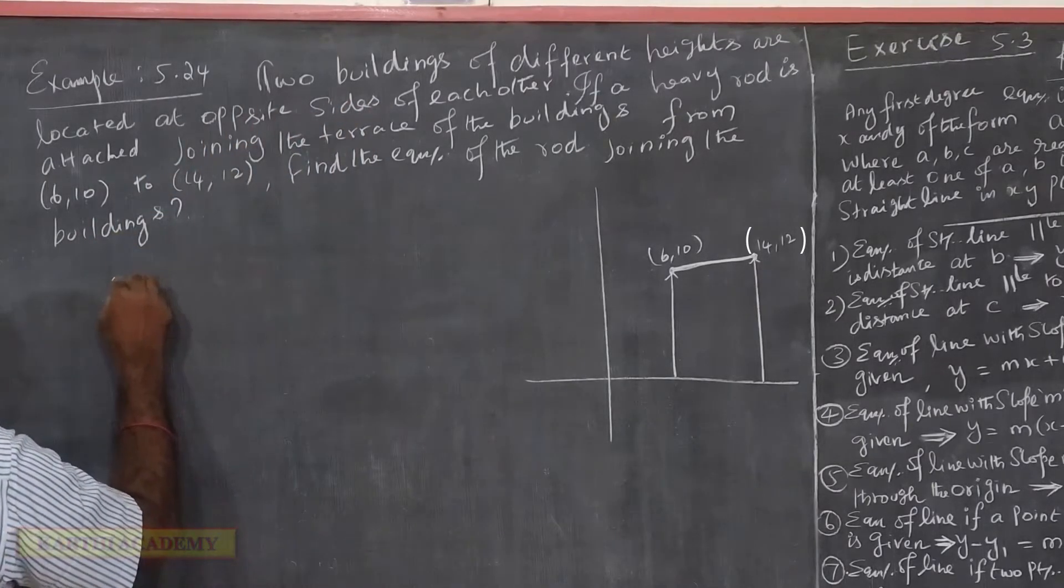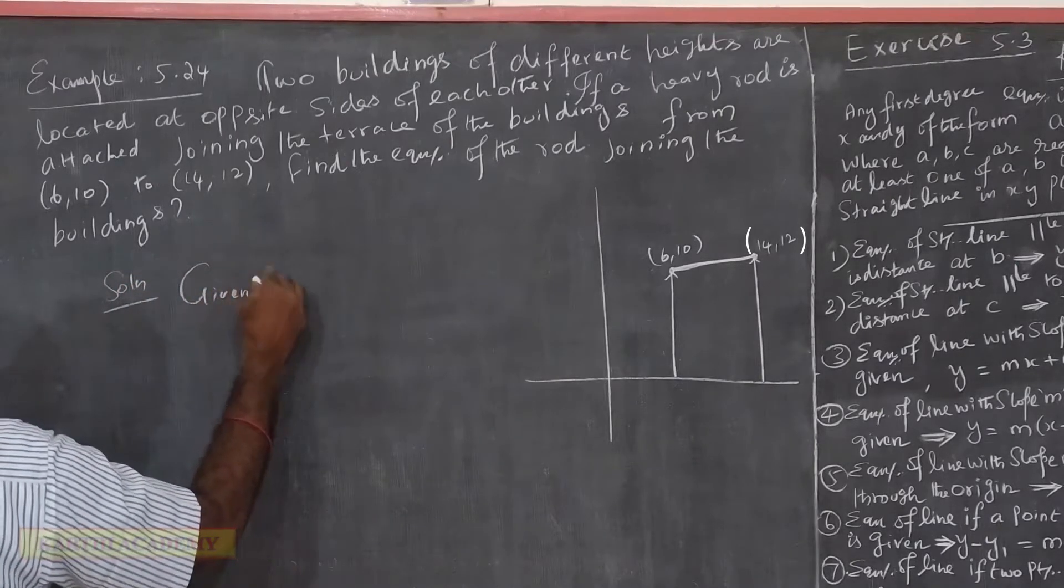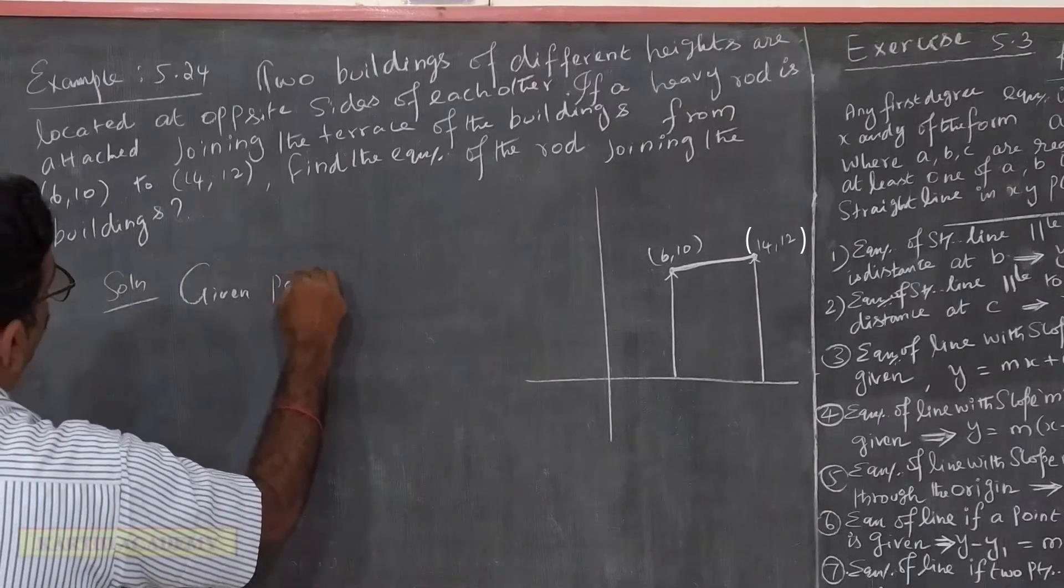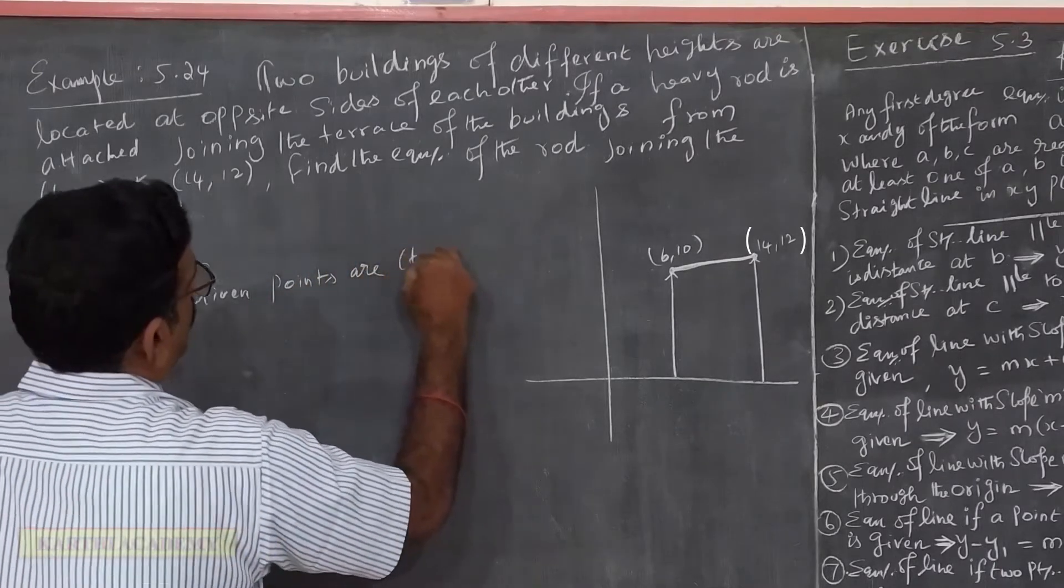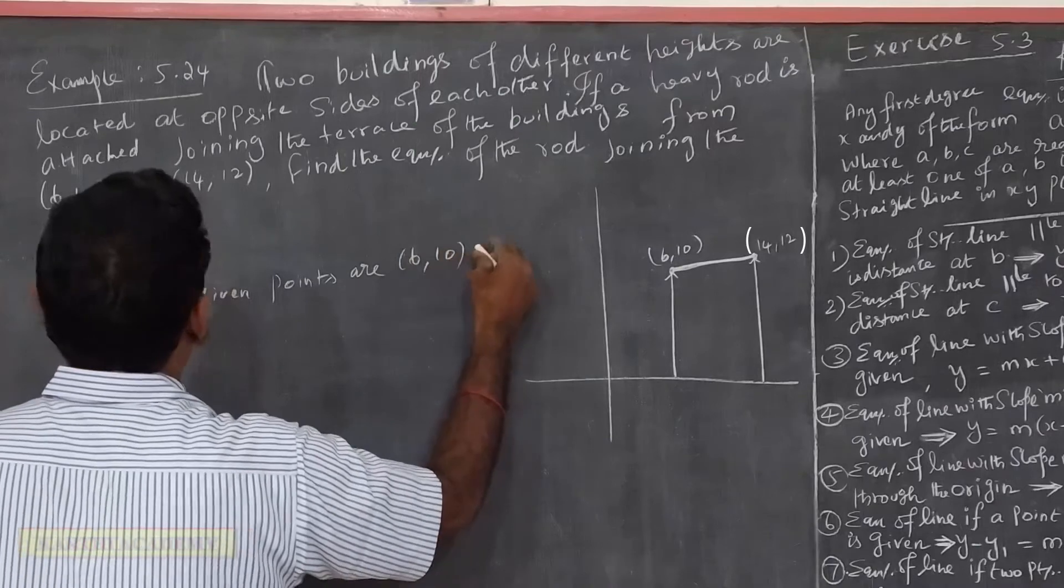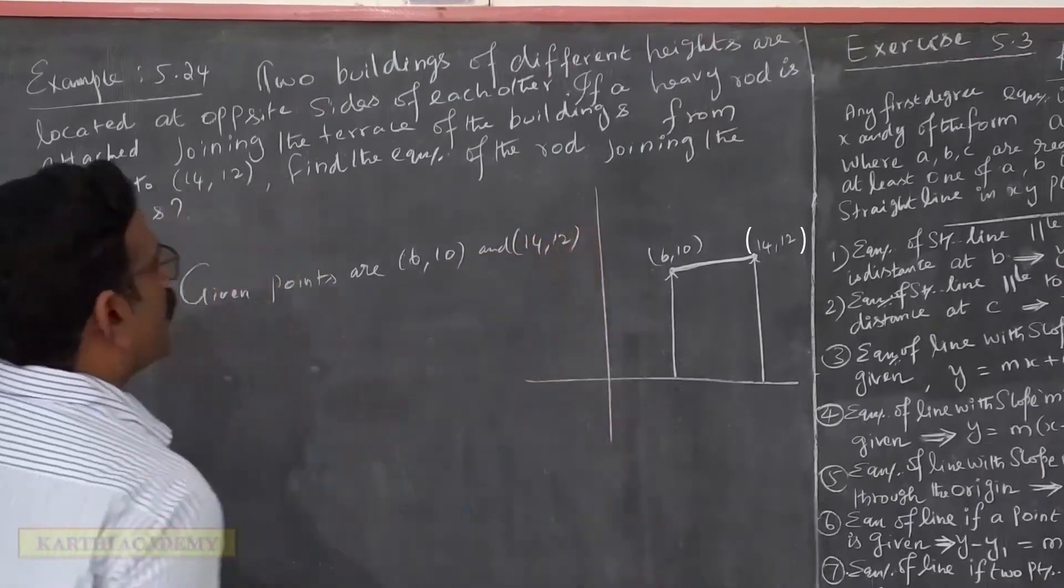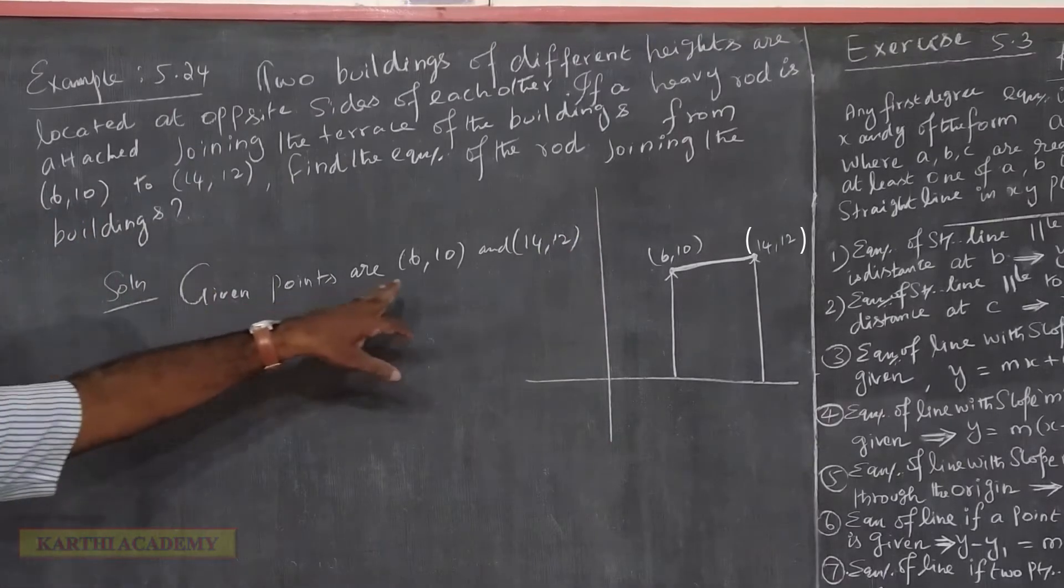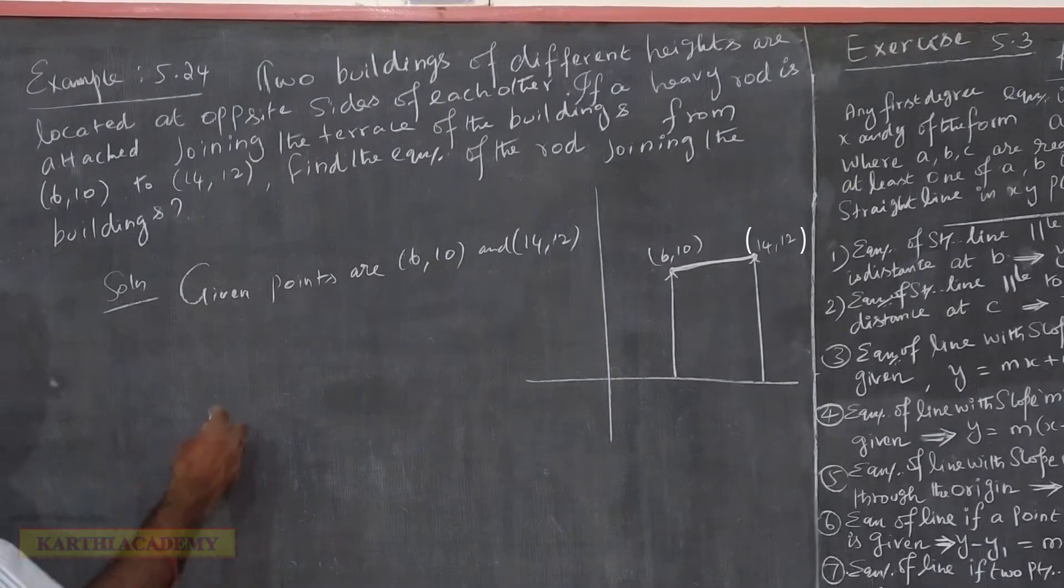Now, let us see. If we find the equation, the points are given. The points are (6,10) and (14,12). So we have two distinct points.